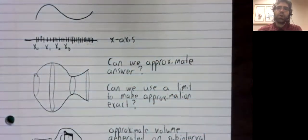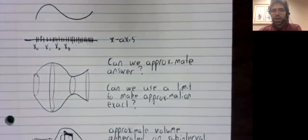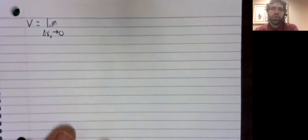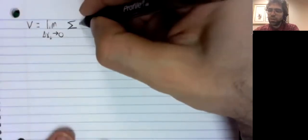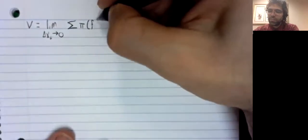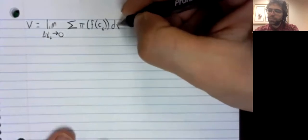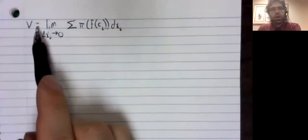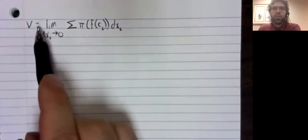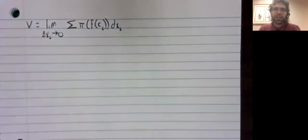So if we keep repeating this process with smaller and smaller intervals, our approximation gets better. And it becomes exact in the limiting case. In this case, we take the limit as the size of the sub-intervals all go to zero over this sum. And we no longer have an approximate equal sign here. This is exactly the volume.